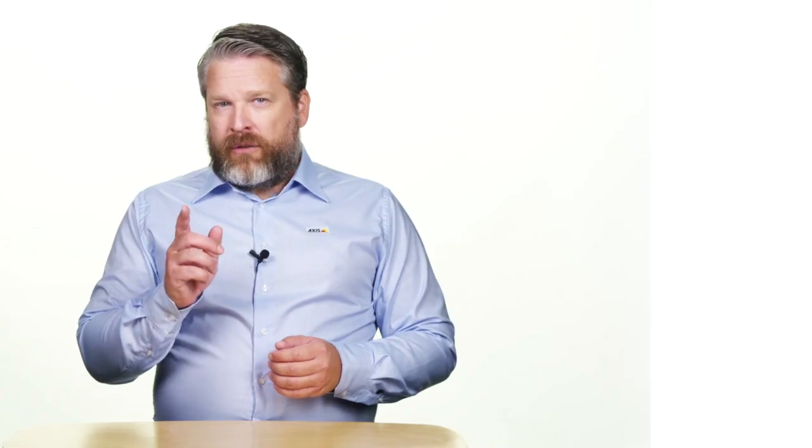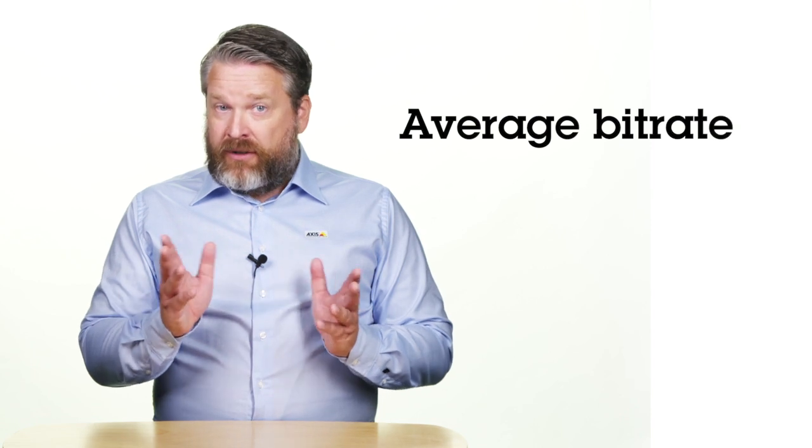A codec based on average bitrate does things differently. You start by setting a desired bitrate over time that matches your storage capacity. The compressor keeps track of the historical bitrate usage and if it's lower than the set value, quality is increased.